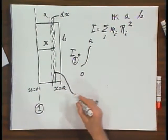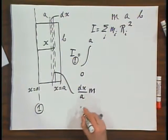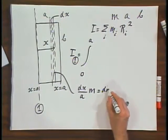Well, the mass that is in this ribbon is dx divided by A times M. That is clearly dM.